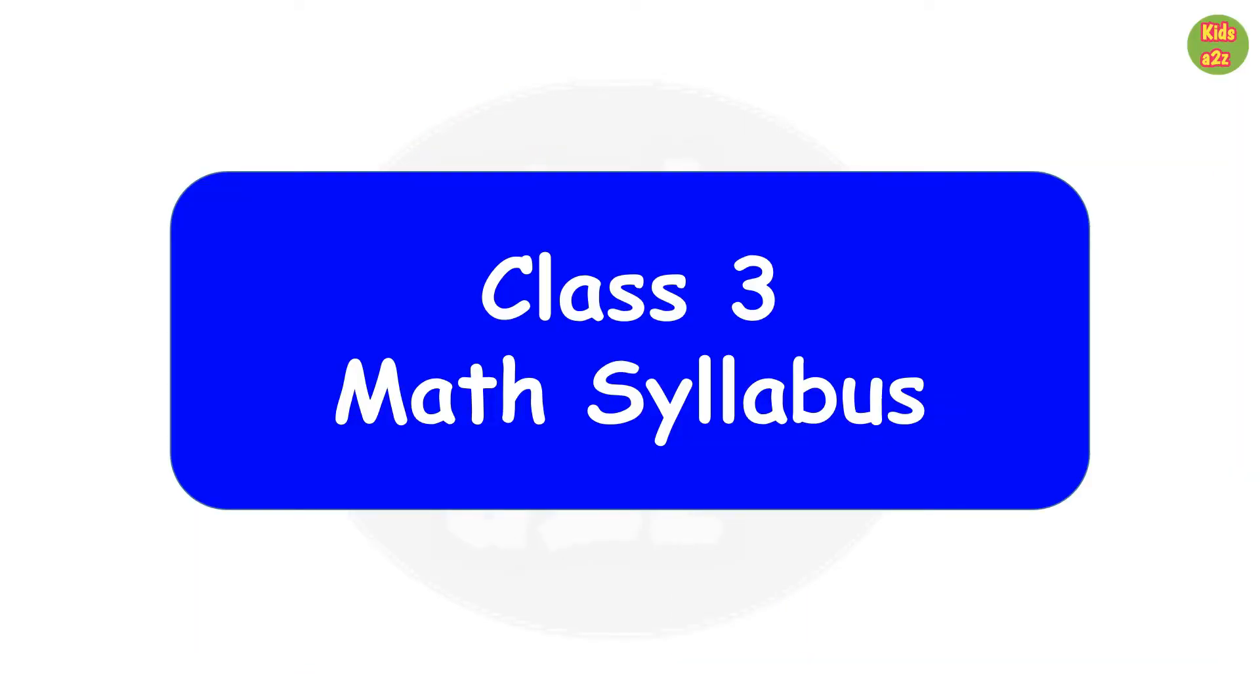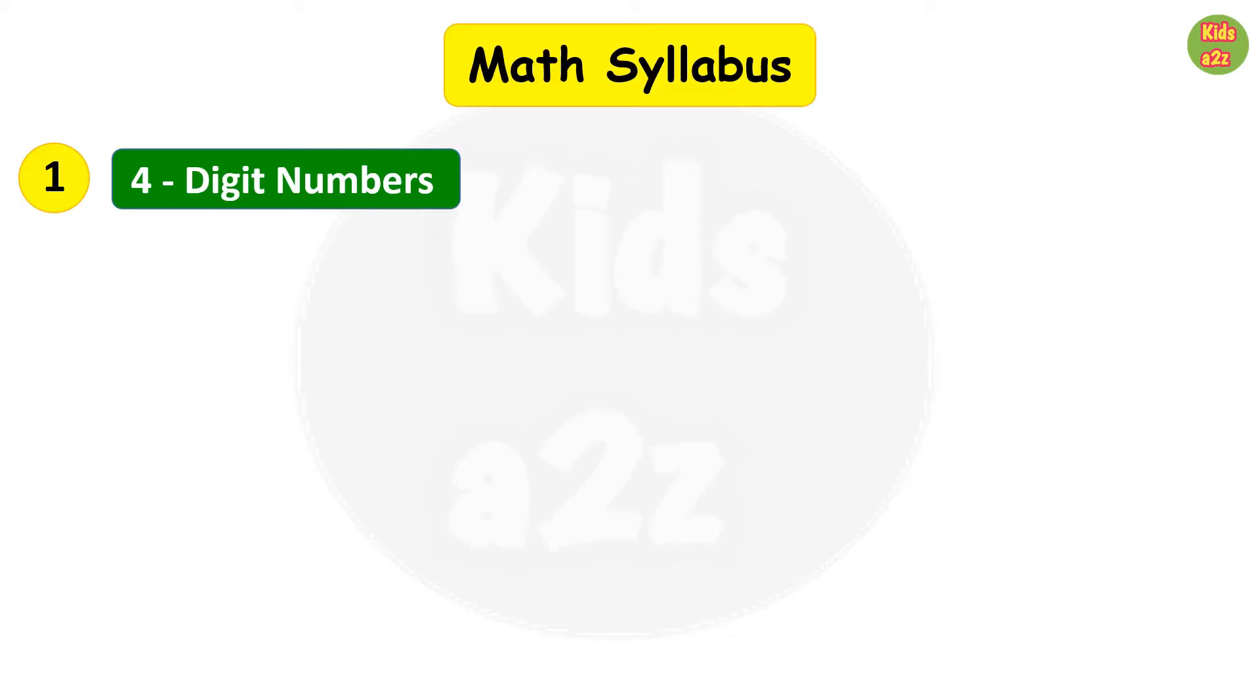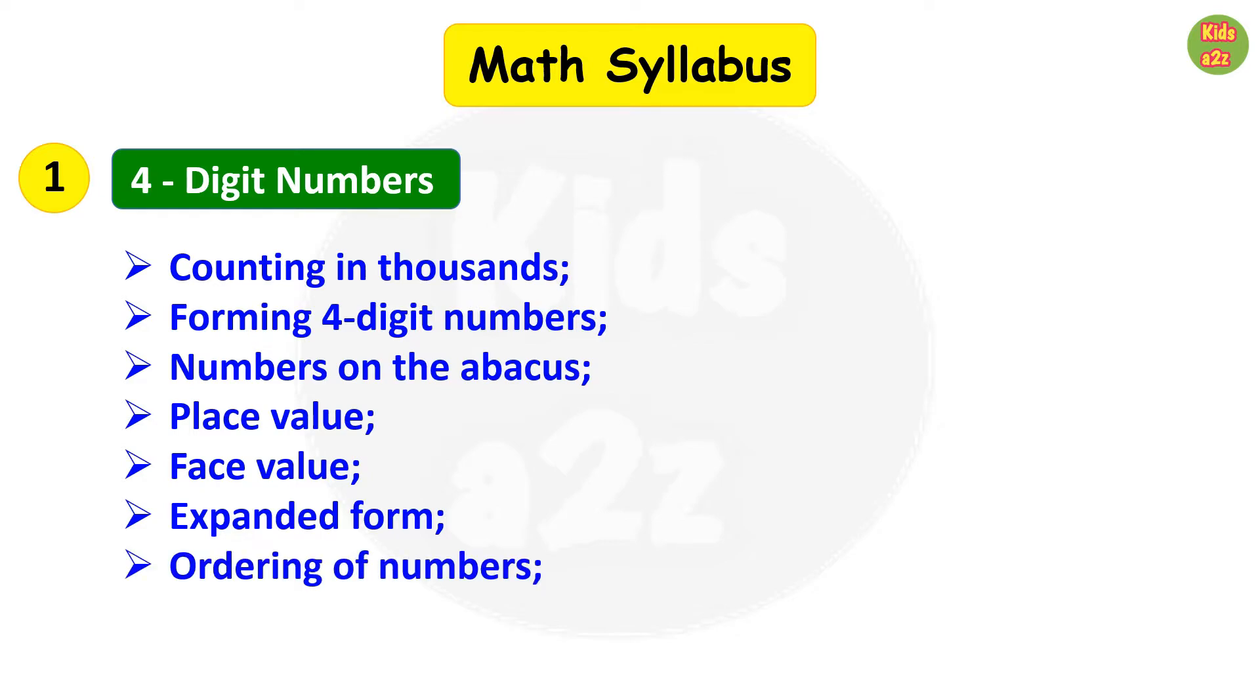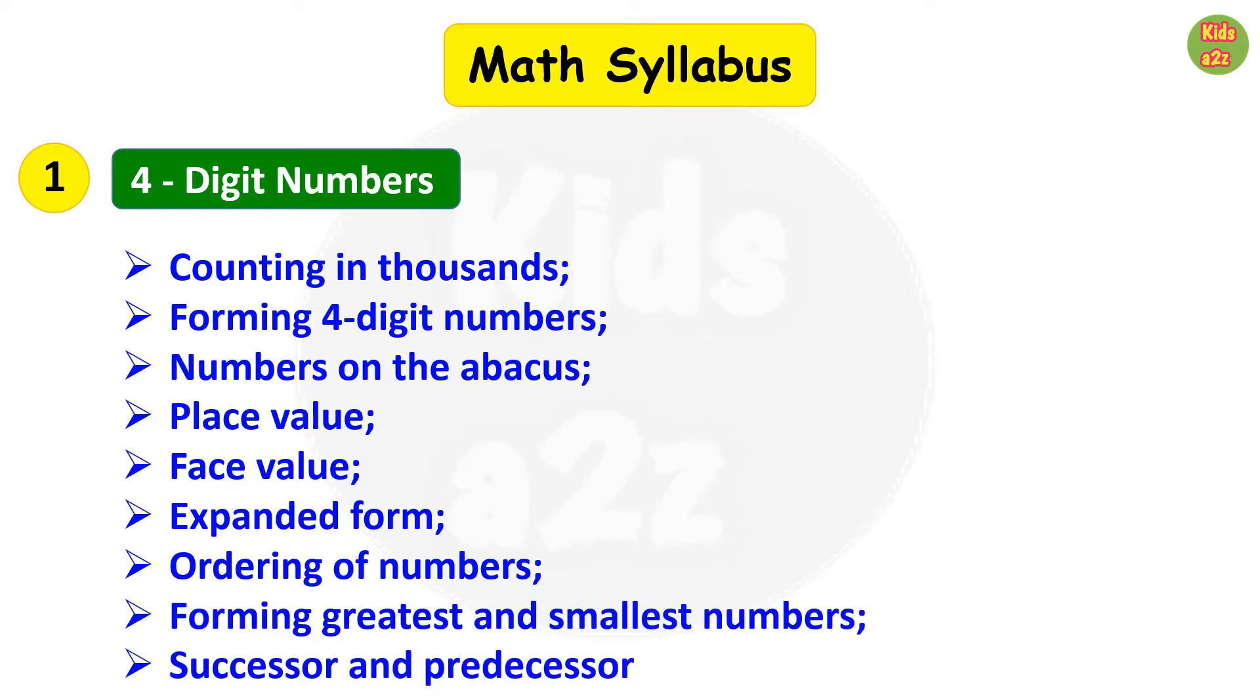Class 3 math syllabus. Here I'm sharing the chapter-wise syllabus. At first, they will learn four-digit numbers. It includes counting in thousands, forming four-digit numbers, numbers on the abacus, place value, face value, expanded form—that means they will express four-digit numbers in expanded form—ordering of numbers, forming greatest and smallest numbers, successor and predecessor.